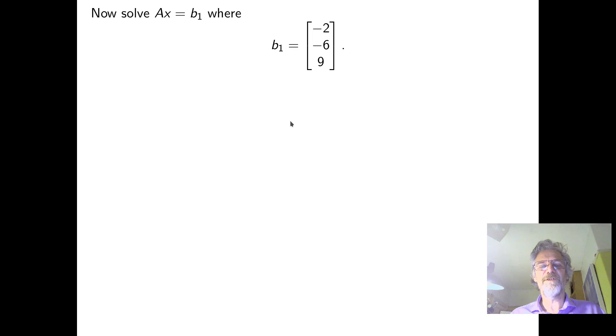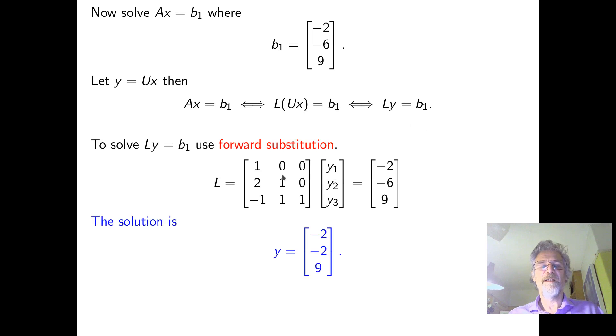And then the intermediate variable that we just kind of invent, Y is U times X. So LY equals b1. And of course, we do that by forward substitution. So let's see how that works. And so one times Y1 equals minus two. So Y1 is minus two. We've already got Y1. Two times Y1, so that's minus four. Plus Y2 is minus six. So Y2 has to be minus two. And then finally, we've got minus two times one, minus two times minus one. So that's two. And then we've got minus two. So the responsibility for fixing this to be nine is all on Y3, and Y3 has to be nine. And so we've got the Y solution. We haven't finished yet. We've got a little bit more work to do.